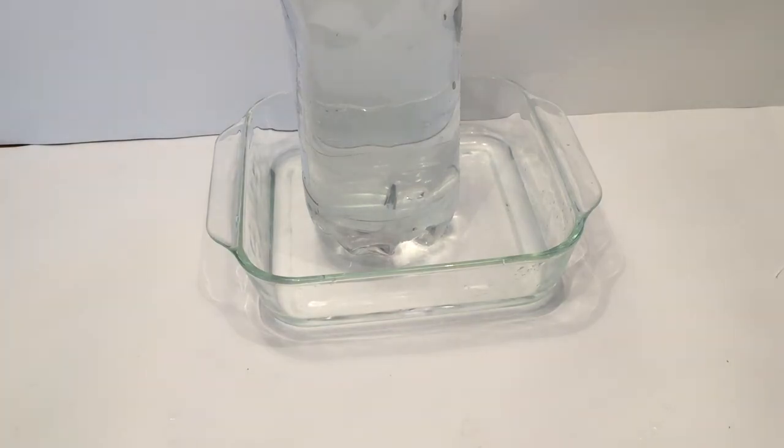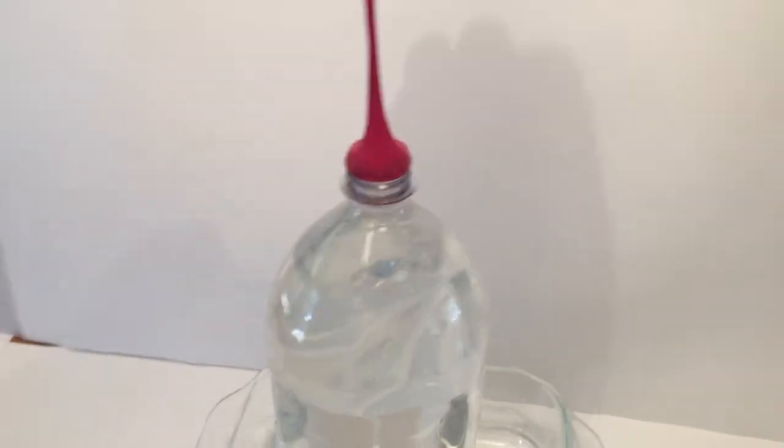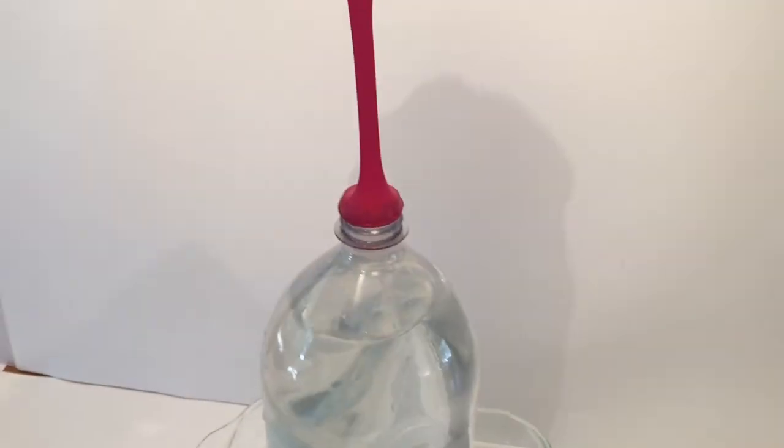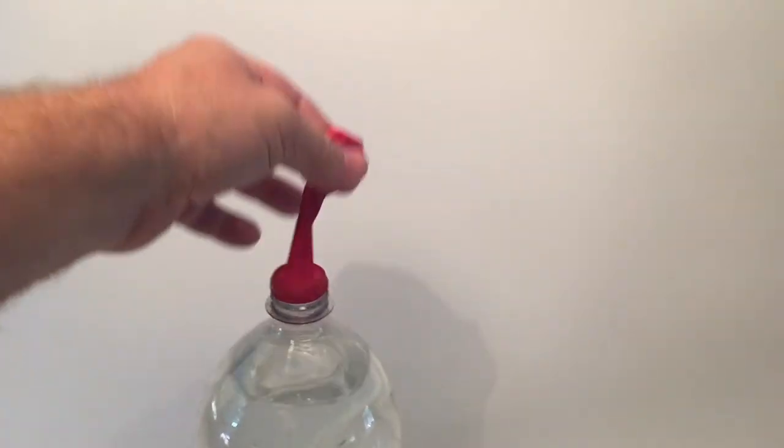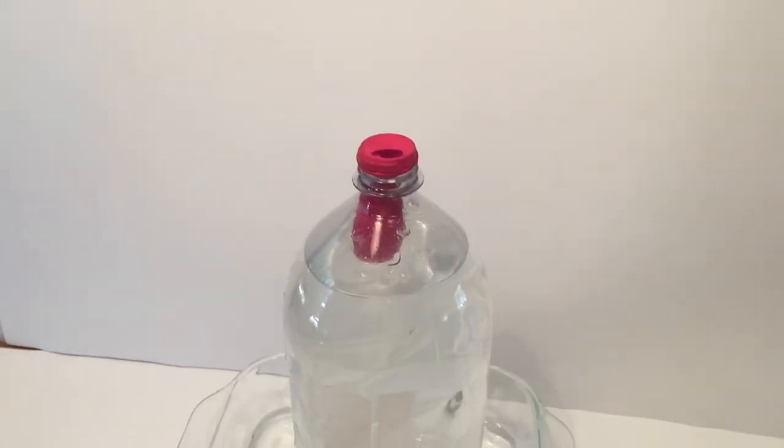Some water will come out, so have a dish underneath it, and then start giving a pull up and down on the balloon a number of times. It'll create a little bit of pressure, and then suddenly it will invert into the bottle. So just keep pulling it up and down, and there it goes, just like that.